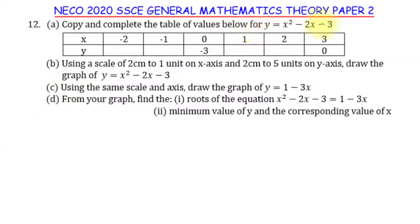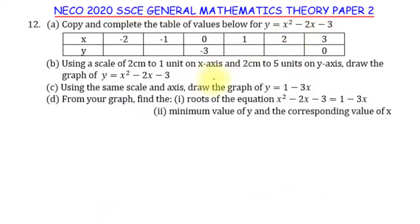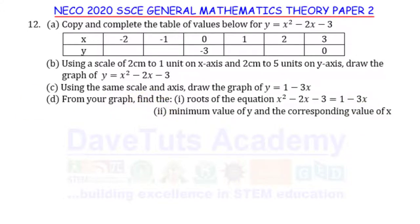In this question on graphical solution to quadratic equations, we are asked to copy and complete the table of values for y = x² - 2x - 3, then using a scale of 2 cm to 1 unit on the x-axis and 2 cm to 5 units on the y-axis, draw the graph of the quadratic equation. Using the same scale, we draw the graph of y = 1 - 3x, a linear equation. From the graph, we find the roots of x² - 2x - 3 = 1 - 3x and the minimum value of y and the corresponding x.